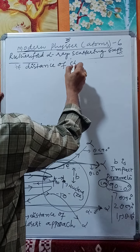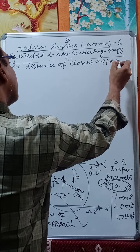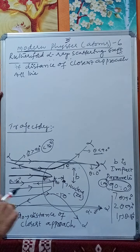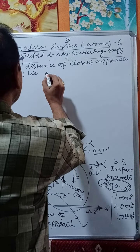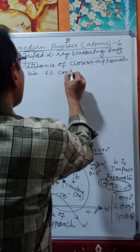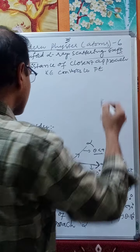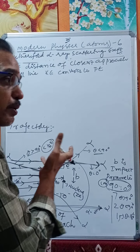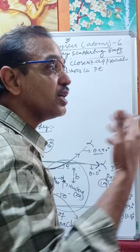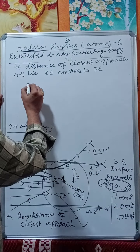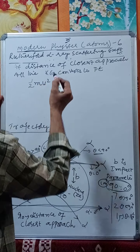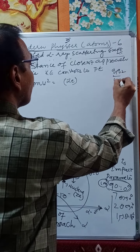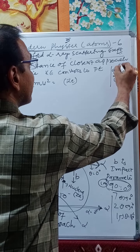At the distance of closest approach r₀, the alpha particle momentarily stops and retraces its path. At this point, all kinetic energy converts into potential energy — since velocity becomes zero, kinetic energy is minimum and potential energy is maximum. Therefore: ½mv² = Ze·2e / (4πε₀r₀).